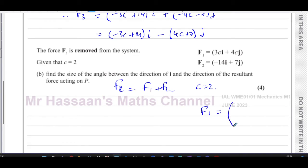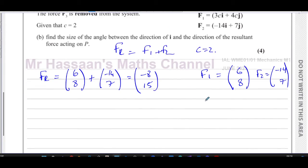F3 is removed from the system and we know that c is equal to 2. So we can say F1 is going to be 3 times 2, which is 6i, and 4 times 2, which is 8j. And F2, as we know, is minus 14 and 7. So the resultant force is equal to the sum of these two. It's going to be 6, 8 plus minus 14, 7. So 6 minus 14 is minus 8, and 8 plus 7 is 15. So the resultant force is minus 8, 15.